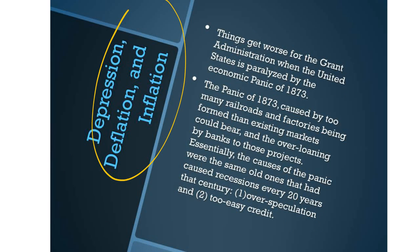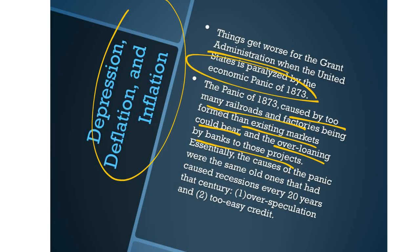Depression, deflation, and inflation — things got worse for the Grant administration when the United States was paralyzed by the economic Panic of 1873. The panic was caused by too many railroads and factories being formed than existing markets could bear, and the overloading of banks lending to those projects. Essentially, the causes were the same recurring ones that had caused recessions every 20 years that century, due to over-speculation and credit that was given too easily.